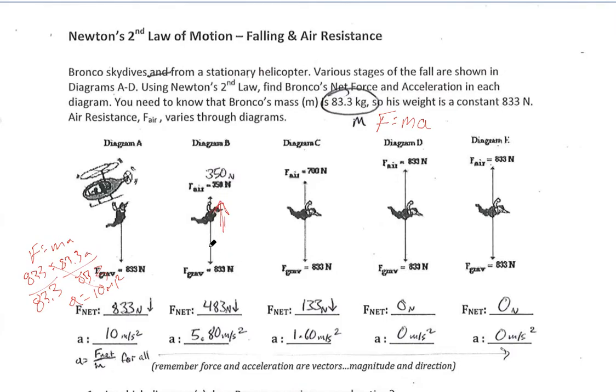It was 833 to begin with because there was no air resistance acting on Bronco yet, but now there is air resistance. So our net force is 833 down, 350 up. 833 minus 350 gives me 483 newtons. When I plug that into F equals mA, I've got a net force of 483 because 350 of those newtons are being resisted by air resistance, so I'm left with 483. His mass hasn't changed. So his acceleration, because his force has decreased, would also decrease, and in this case it does. 483 divided by 83.3 gives me 5.8 meters per second squared.